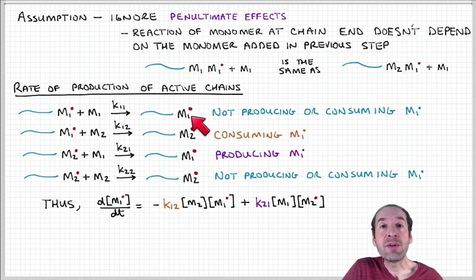There's no change to the number of sites that have monomer one active on the chain because we're basically producing the same thing.